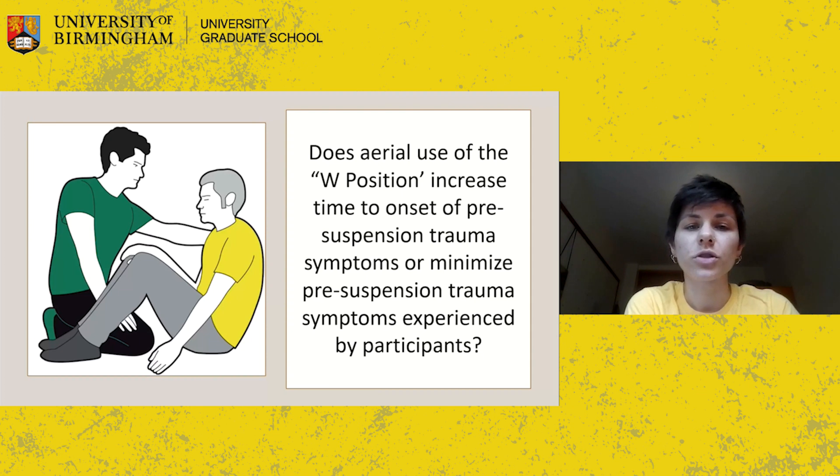One recommendation used by tree surgeons primarily is to use the W position to combat shock. This position places the victim in the relative shape of a W, with the knees drawn up to the chest to keep blood from pooling in the lower legs. While it's most commonly used when the victim is on the ground and leaning against a wall, use of the W position while the victim is in suspension hasn't actually been verified yet in clinical practice.